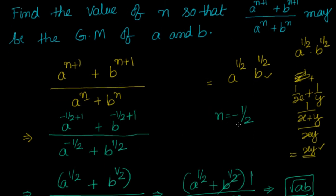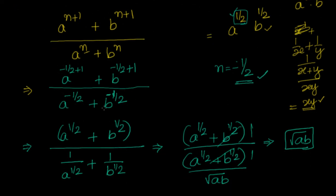So the value of n is minus 1 by 2. We arrived at this because GM is a to the power of half times b to the power of half, so n must relate to half. If n were positive, we'd get powers of 3 by 2 and 1 by 2, which don't simplify correctly. With n negative, the denominator terms cancel with the numerator and we get root ab. Substituting minus 1 by 2 confirms everything cancels and we get root ab.